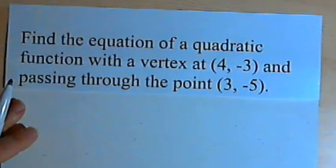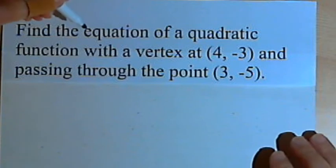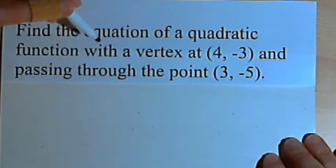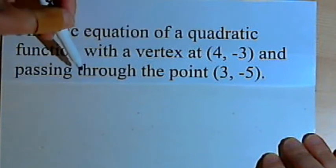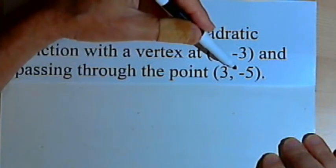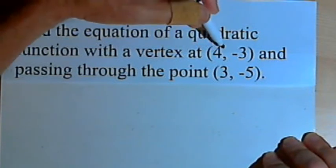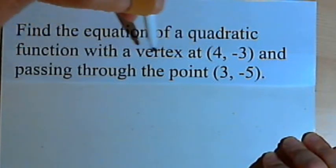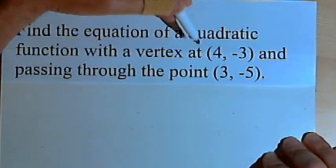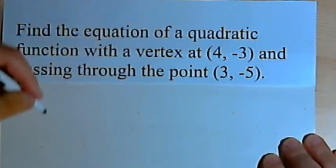Let's say you've got a problem like this: find the equation of a quadratic function with a vertex at a given point and passing through another point. Since we've been given the vertex for this function that we're looking for, let's use the vertex form to find what the function is.